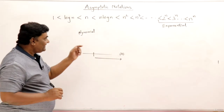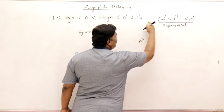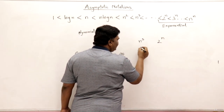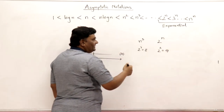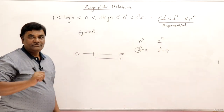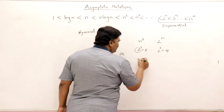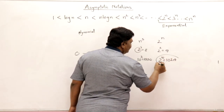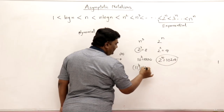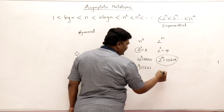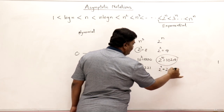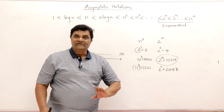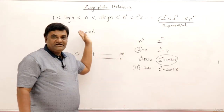For example, 2^n is much greater than n³. If n = 2, then n³ = 8 and 2^n = 4, so don't take n = 2. Take n = 10: 10³ = 1000 and 2^10 = 1024 — slightly bigger. At n = 11: 11³ ≈ 1331 and 2^11 = 2048, which is doubled. So don't take small values of n. From some value of n onwards, 2^n is greater, so they are arranged in increasing order.